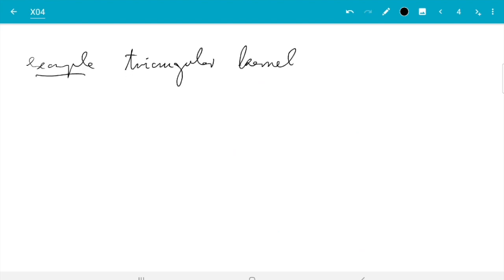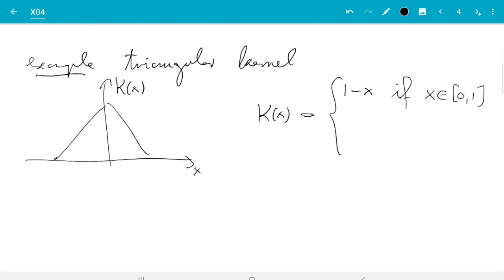Example, triangular kernel. So here, we have kernel function which looks like that. So k of x is 1 minus x if x is in the interval 0 to 1 and x plus 1 if x is in the interval minus 1 to 0 and 0 otherwise.